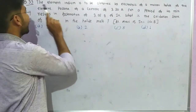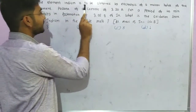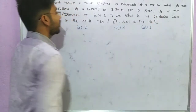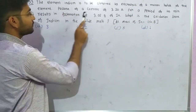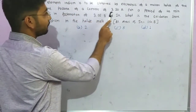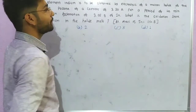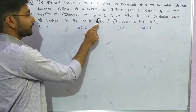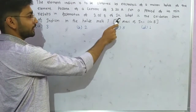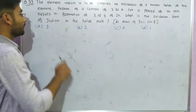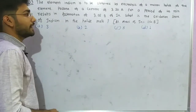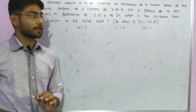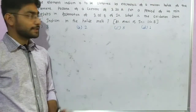Here is a question. The element indium is to be obtained by electrolysis of molten halide of the element. Passage of a current of 3.20 ampere for a period of 40 minutes results in the formation of 3.05 gram of indium. What is the oxidation state of indium in the halide melt? Atomic mass of indium is 114.8.